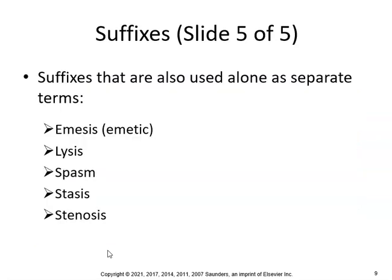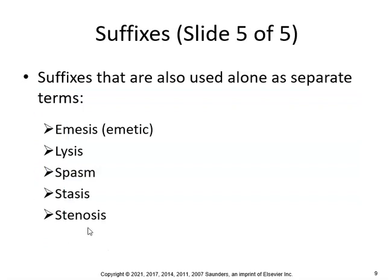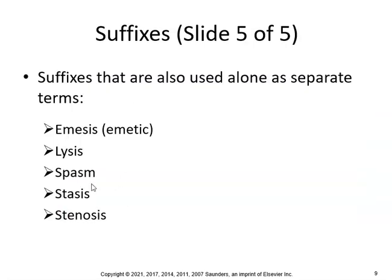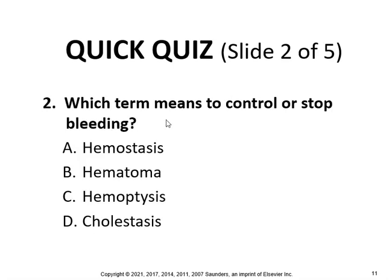Some suffixes are also used alone as separate terms: emesis, lysis, spasm, stasis, and stenosis. You can use these by themselves — for example, lumbar stenosis or just muscle spasm. You don't have to attach these suffixes to another word. Which term means difficulty swallowing? That would be dysphagia. Which word means to control or stop bleeding? That would be hemostasis.